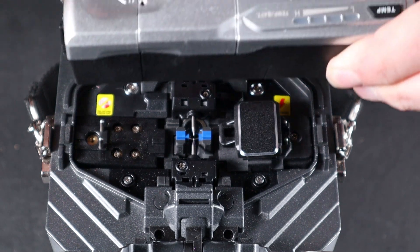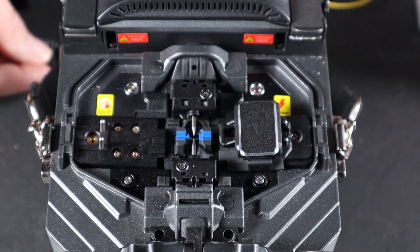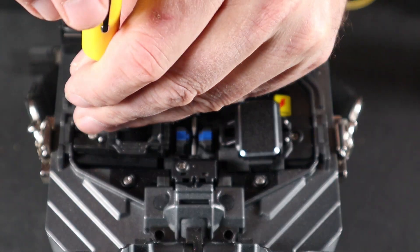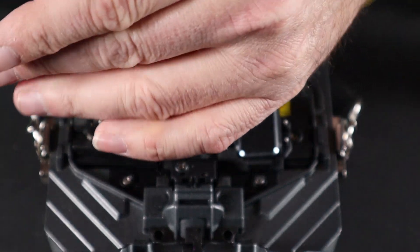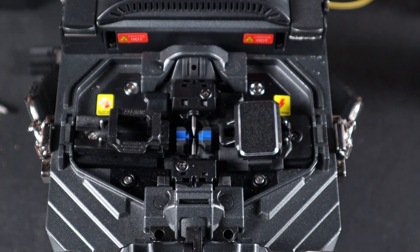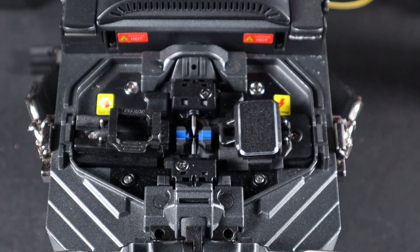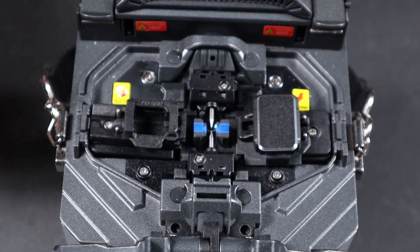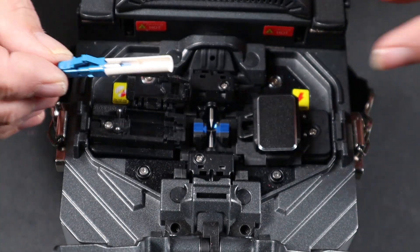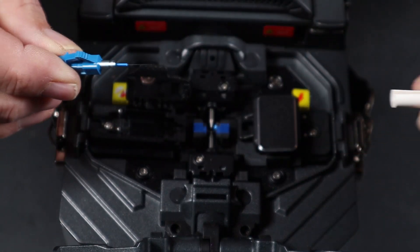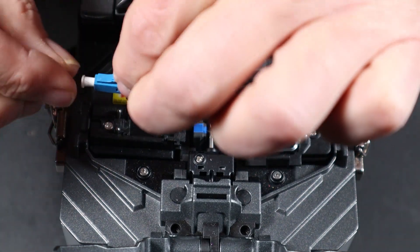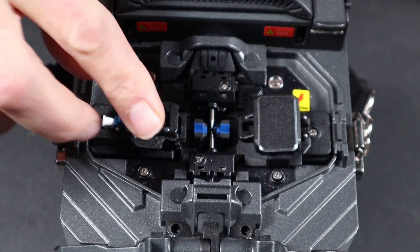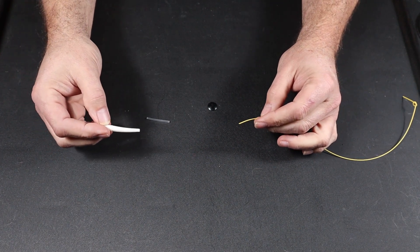For splice on connector, I am going to install the connector holder. And then for this demonstration, I am going to leave the fixed holder in place for the inbound fiber. To load your splice on connector, open your holder door, remove the protective shell, place your splice on connector in the holder. Close your door.